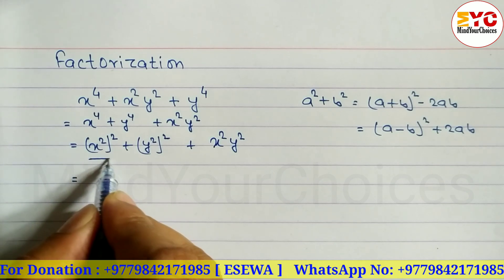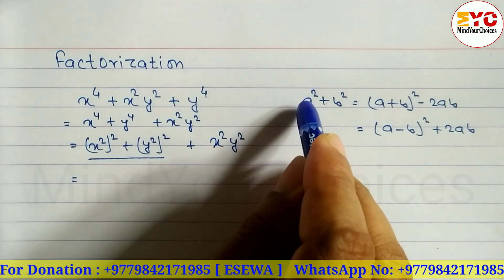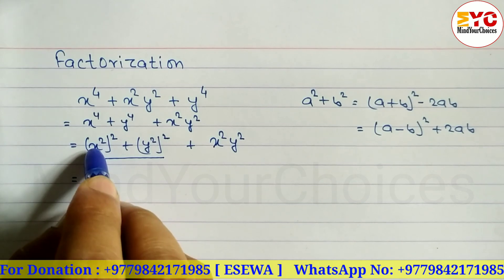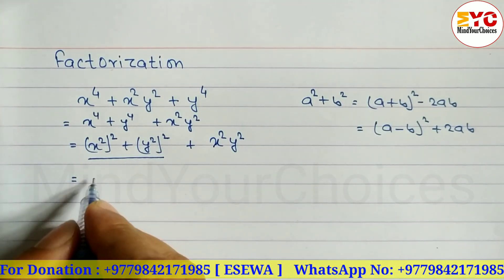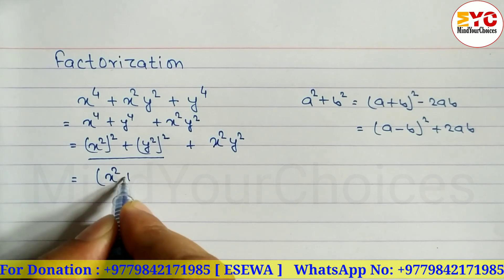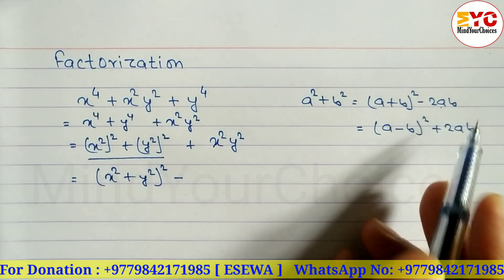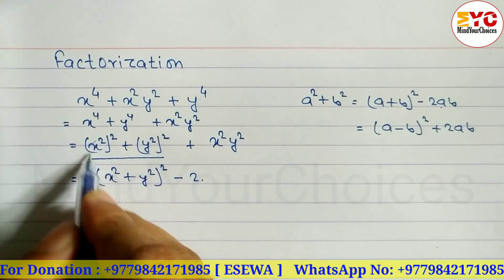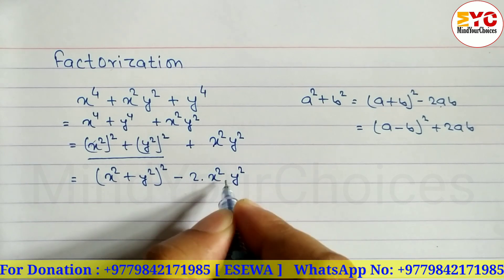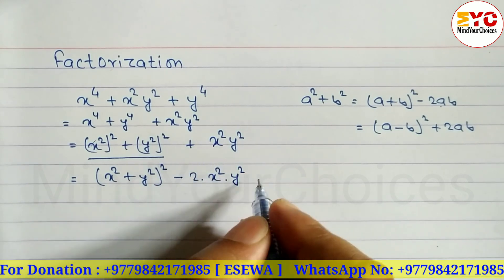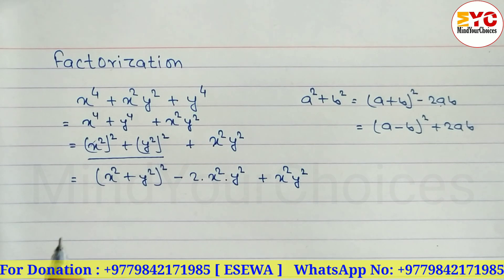This is now in the form of a² + b², where a = x² and b = y². Using the formula (a + b)² - 2ab, we write (x² + y²)² - 2·x²·y², and at the end we keep + x²y².